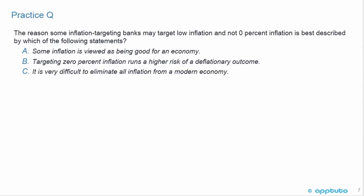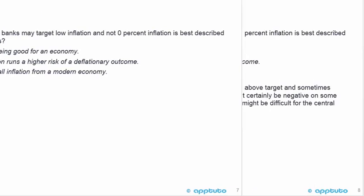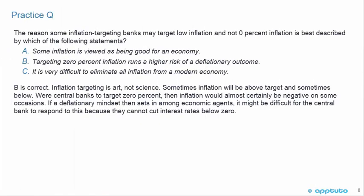Practice question: The reason some inflation targeting banks may target low inflation and not 0% inflation is best described by which of the following? A. Some inflation is viewed as being good for an economy. B. Targeting 0% inflation runs a higher risk of a deflationary outcome. Or C. It is very difficult to eliminate all inflation from a modern economy. B is correct.